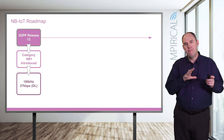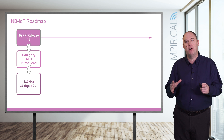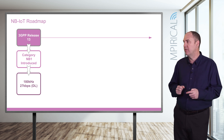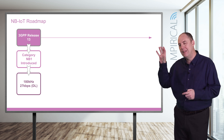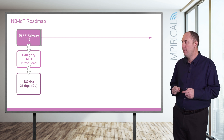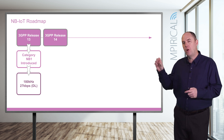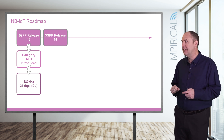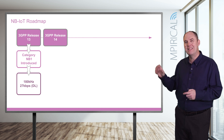That 180 kilohertz — effectively 200 kilohertz — is the same as what you would see in a GSM carrier, or in LTE when looking at a PRB, a Physical Resource Block. So it mirrors the LTE PRB in terms of size to provide this limited capability. And it didn't stop there — we're going to go through the various releases all the way up to Release 17.